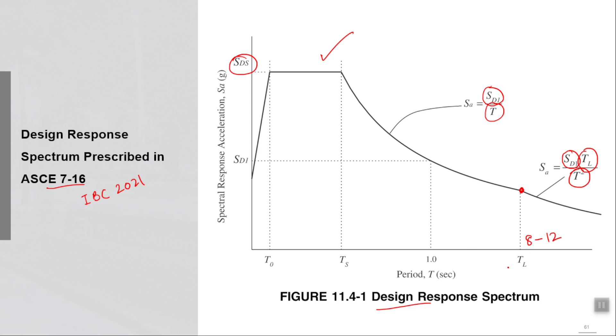You can use some conservative value. The equation for the first line is available. The range of time period for which it should remain constant is available. This T0 and TS are the functions of SDS and SD1. All you need to know is SDS and SD1 and you can plot that curve.